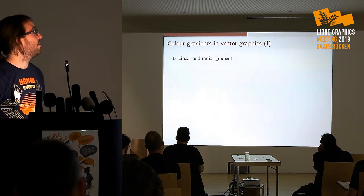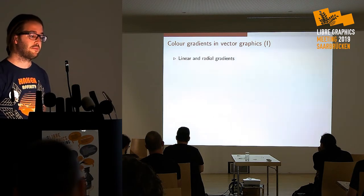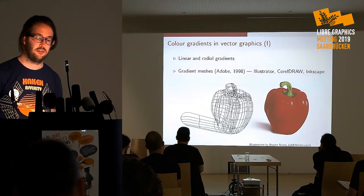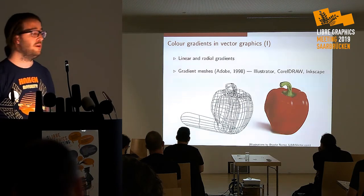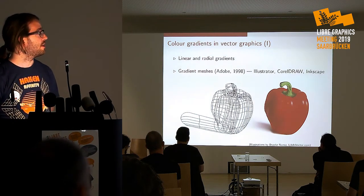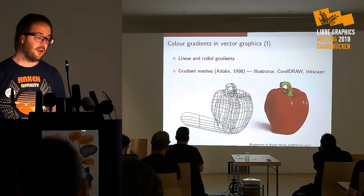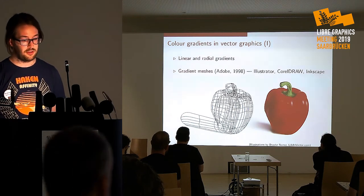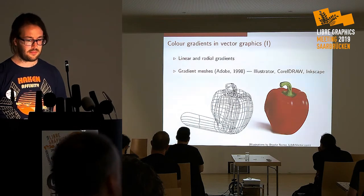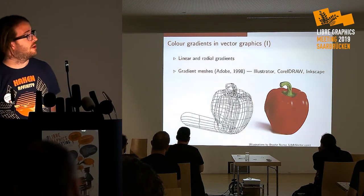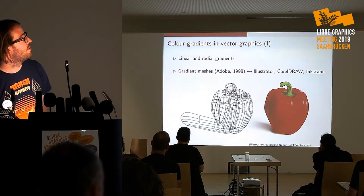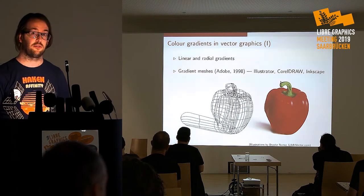You probably know the linear and the radial gradients. Then there is the gradient mesh, which was introduced more or less 20 years ago by Adobe. CorelDraw followed up quickly and Inkscape now also has it. And this bell pepper is one of the common examples to explain the gradient mesh, which I'll do a bit later on. By the way, the stem of this pepper is not the gradient mesh — it's just a lot of linear color gradients stacked on top of each other.